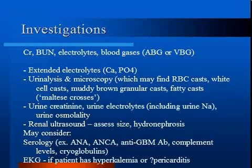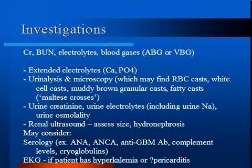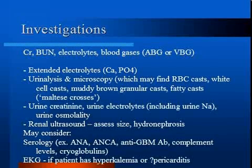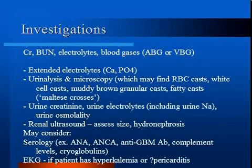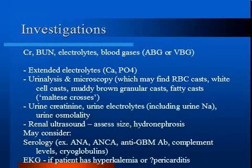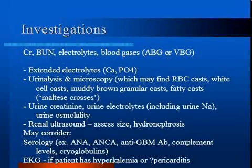Order urine sodium and urine creatinine to calculate the fractional excretion of sodium. A renal ultrasound is useful to look for hydronephrosis suggesting obstruction, or small shriveled kidneys suggesting chronic renal failure. It may also detect thromboemboli of the renal arteries. If preliminary investigations suggest glomerular nephritis, serology studies can be considered. Order an EKG if the patient has hyperkalemia or suspected pericarditis. If the renal diagnosis remains uncertain, consult a nephrologist.